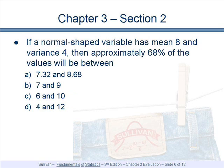If we take the mean minus one standard deviation, we get 8 minus 4 is 4. The mean plus one standard deviation is 8 plus 4, which is 12. So, 4 and 12.